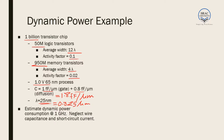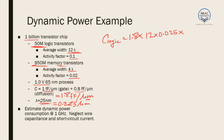We convert to micrometers for consistent units. The capacitance of logic transistors is 1.8 fF/μm × (12 × 0.025 μm), and we multiply by 15 × 10⁶ transistors. After calculation, the total capacitance for logic transistors is 27 nanofarads.